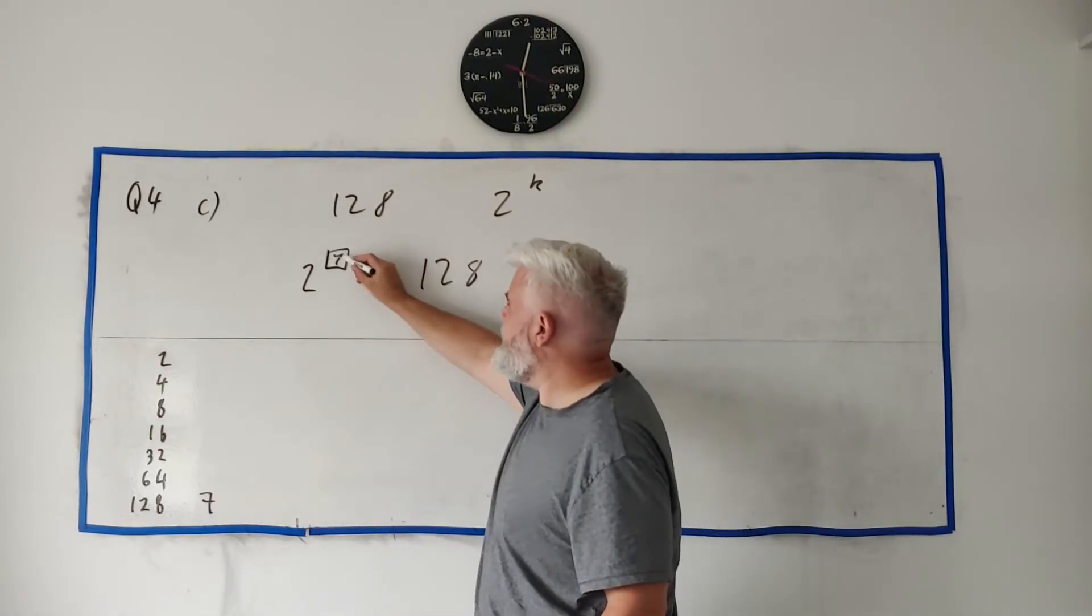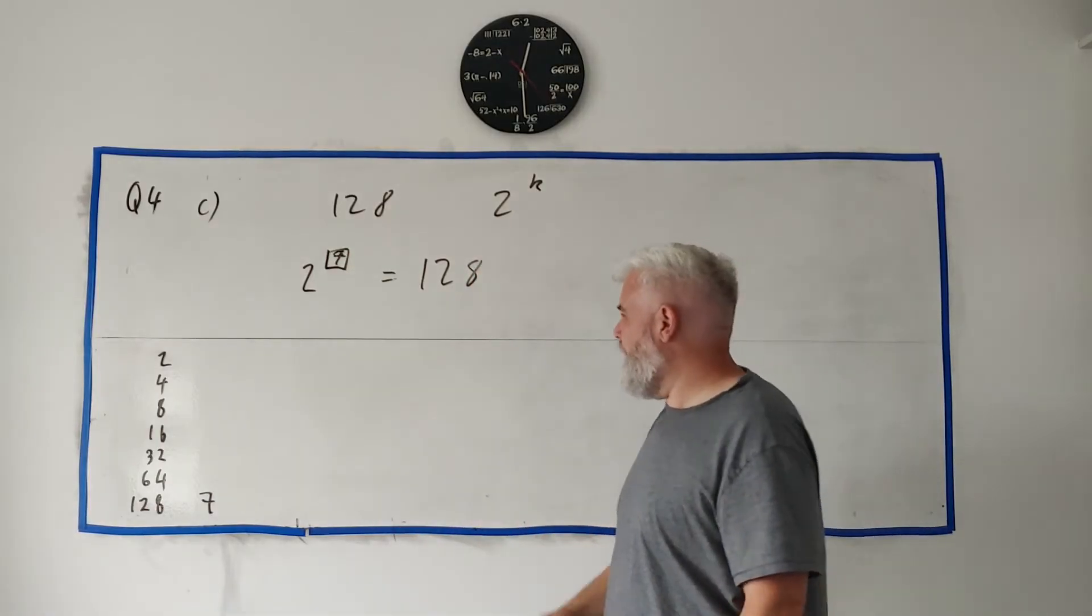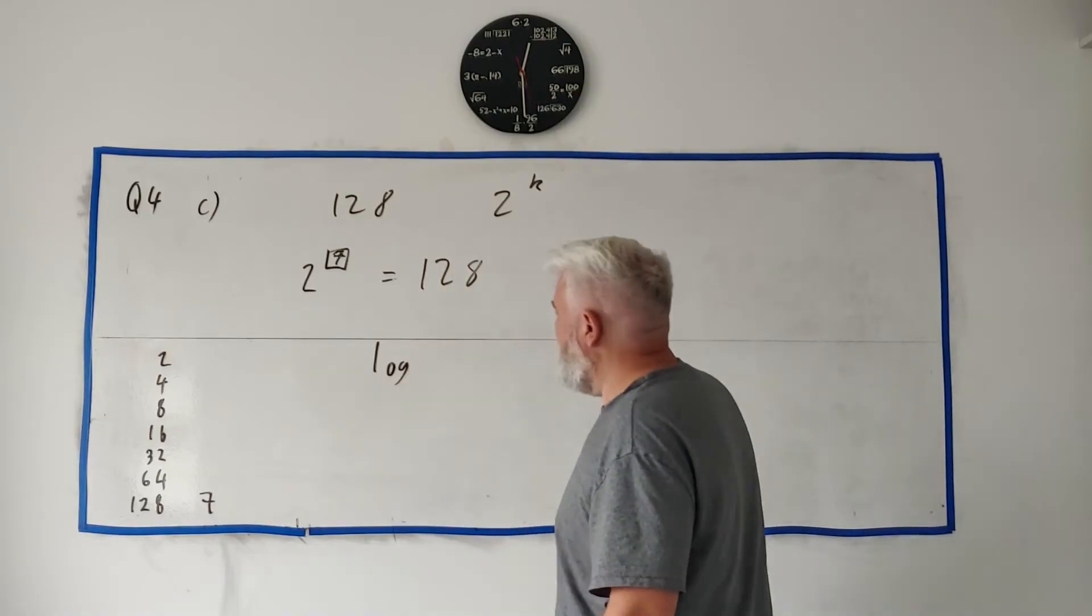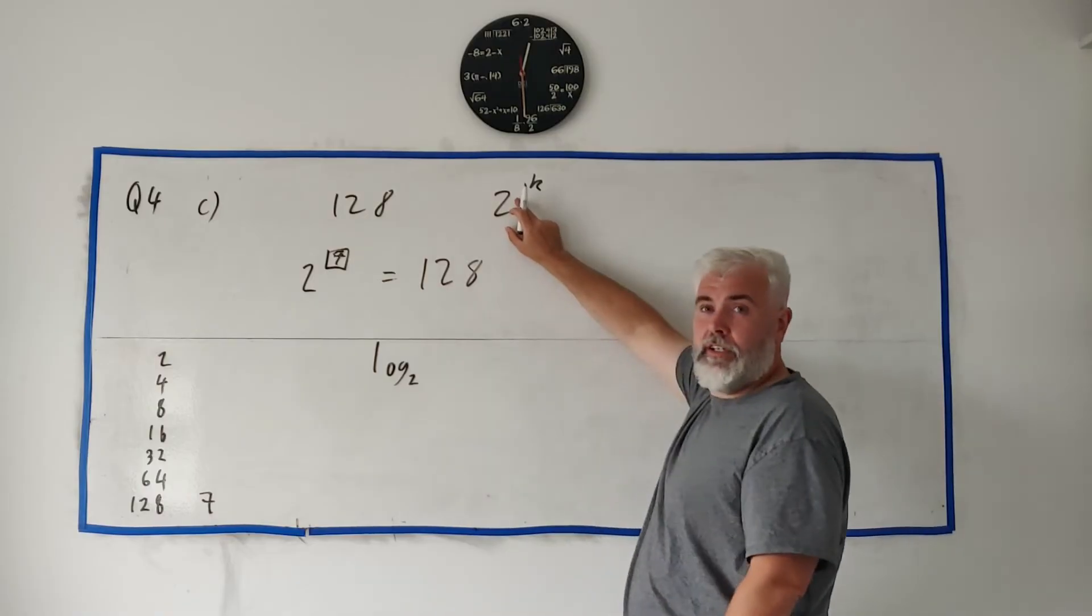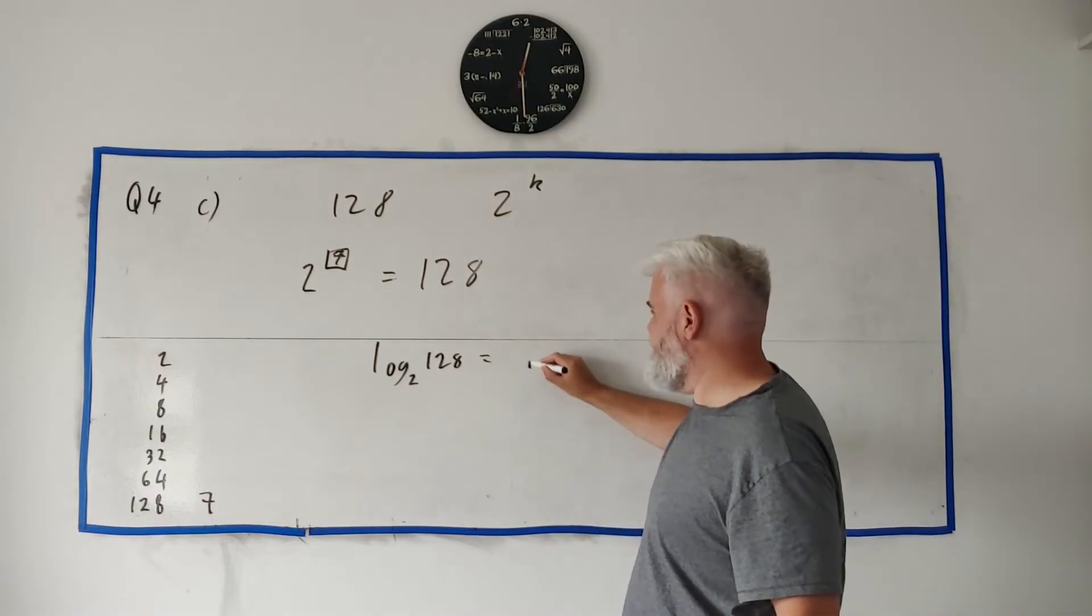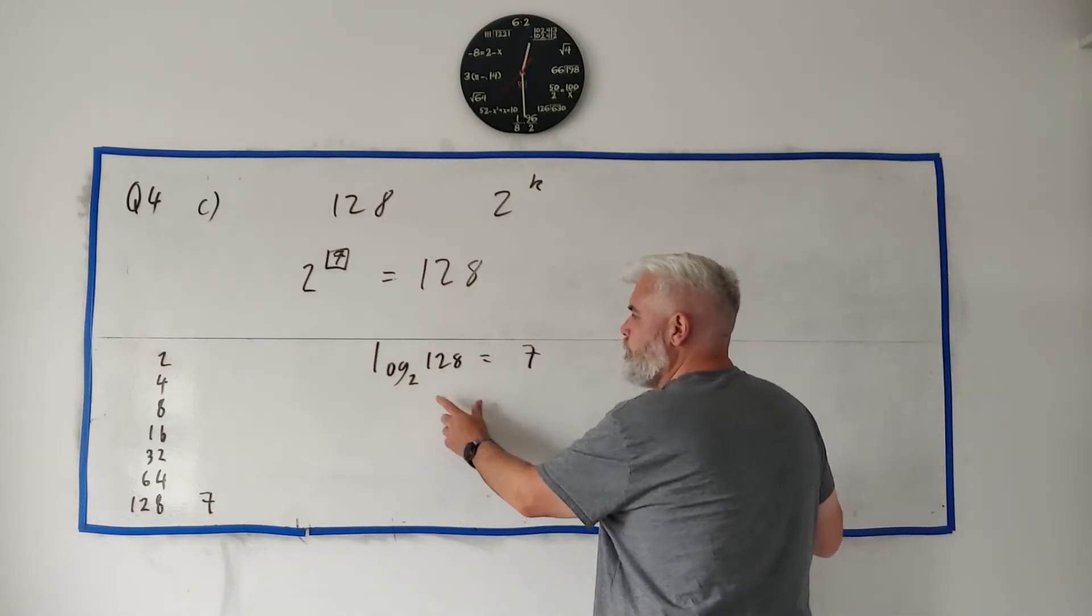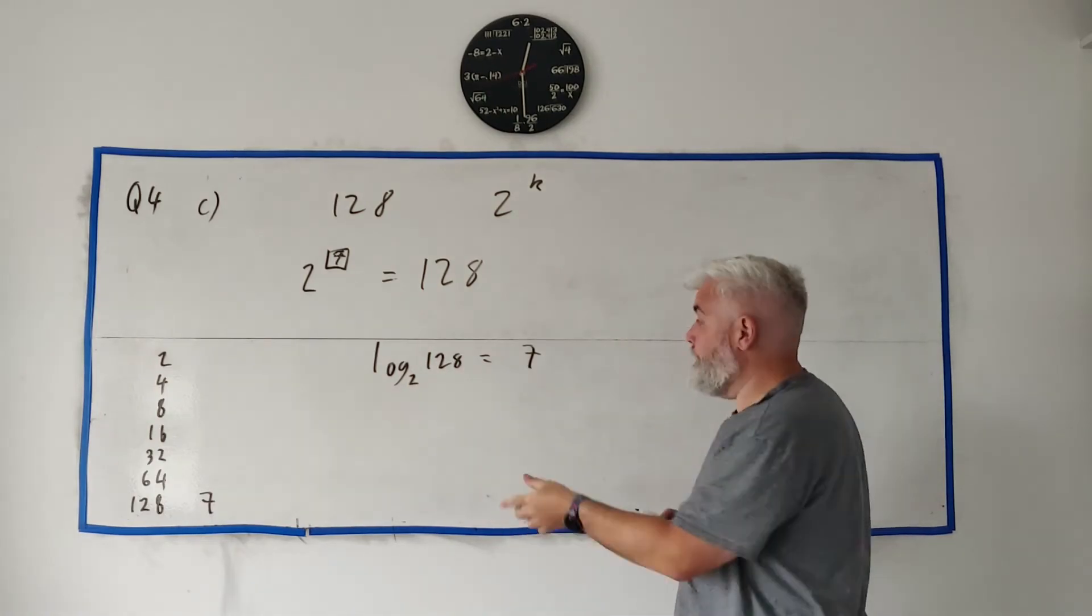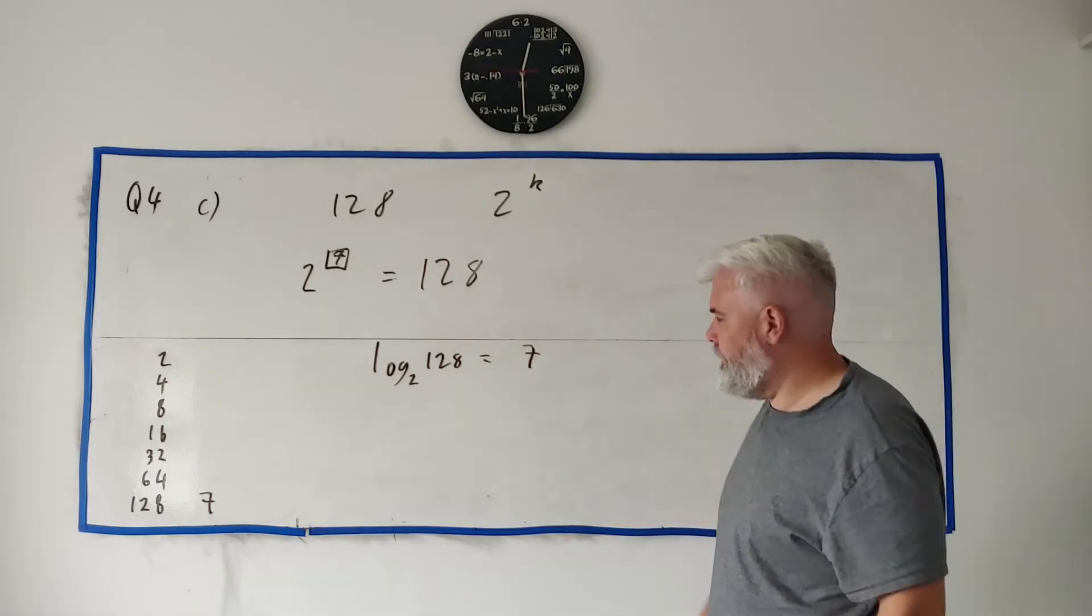There is another way to do this but it's not really ordinary level. Your calculator has a log button and lets you put anything you want down here, in this case I would put 2, and lets you put anything you want here, and it gives you an answer. In this case it'll give you 7. What this is doing is it's telling you 2 to the power of something equals 128, what is that something? The answer: 7. But again, you don't have to do this in ordinary level.